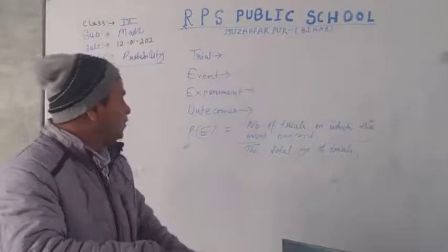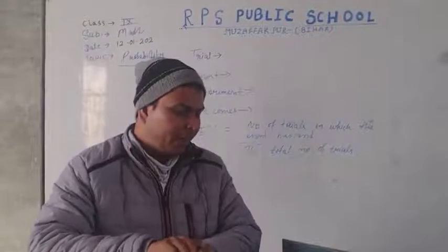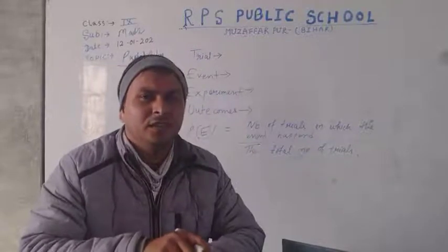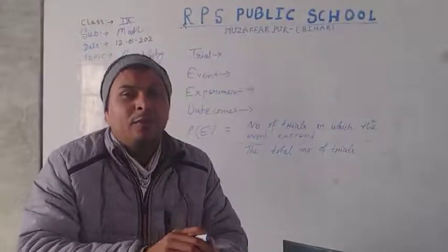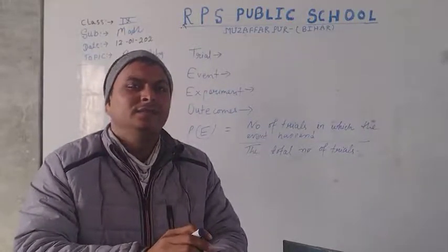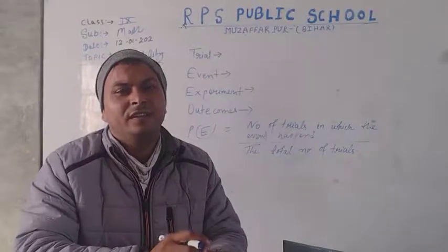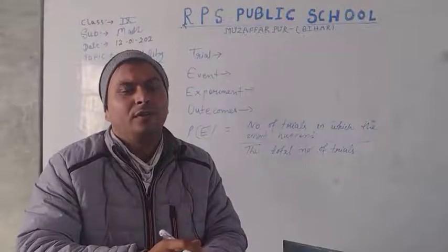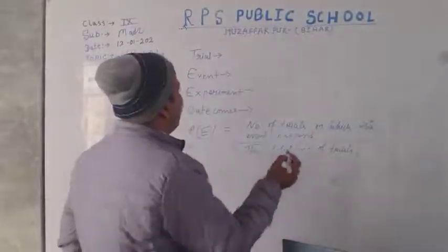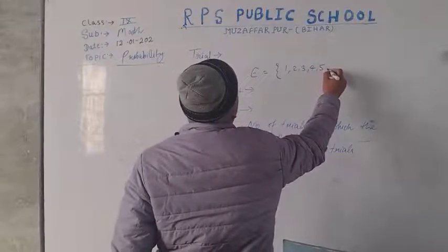The next term is event. An event is the collection of outcomes of an experiment. That means, if we toss a single coin, then our event will be {head, tail}. And if we roll a dice, then our event will be {1, 2, 3, 4, 5, 6}.